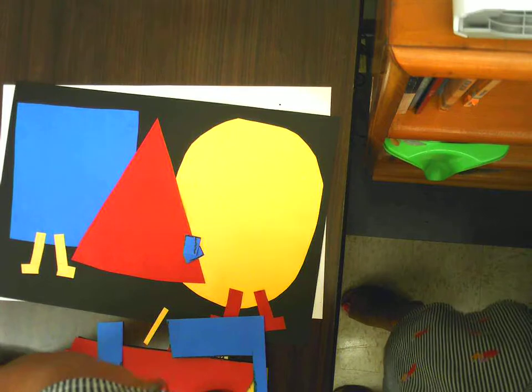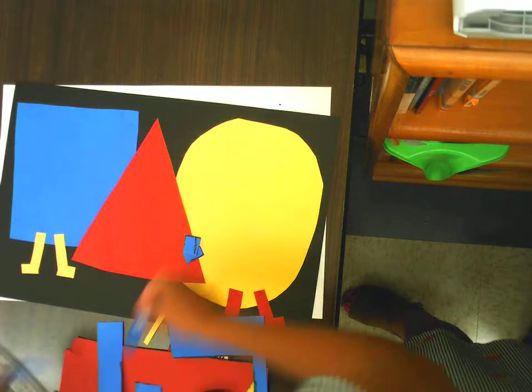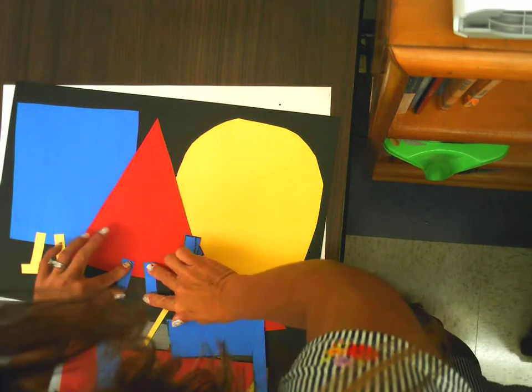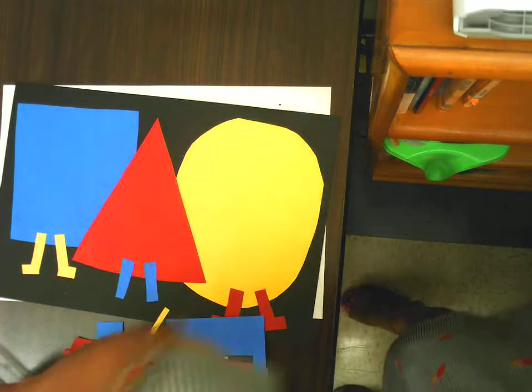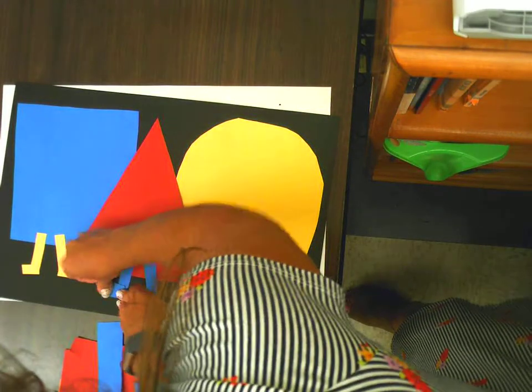Every time you glue, remember to press the crayon to the glue sponge. That way we do not see the crayon on our paper.